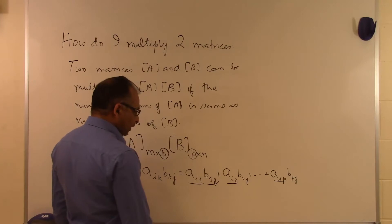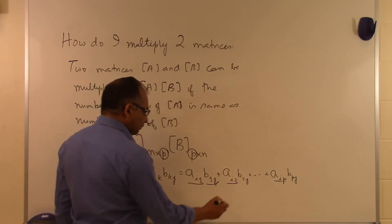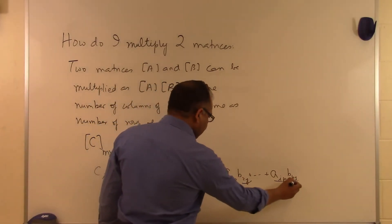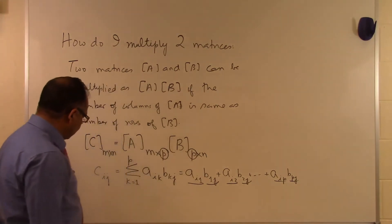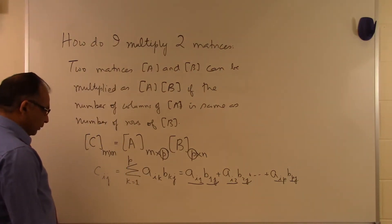The elements taken from B are all in the jth column, and the row number is changing. That's how we find the C_ij element.